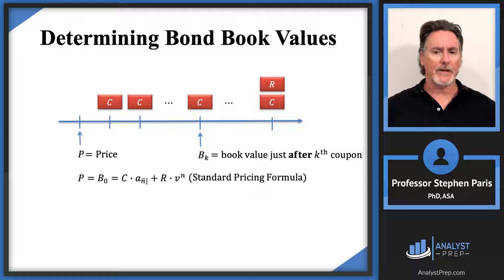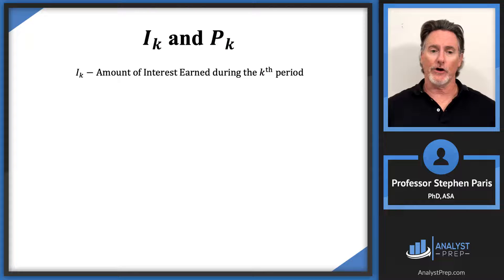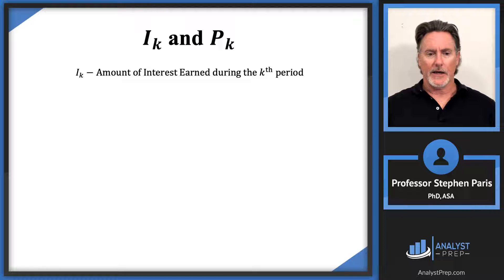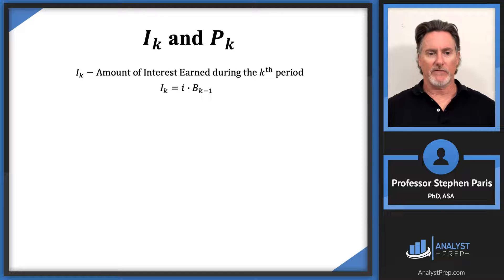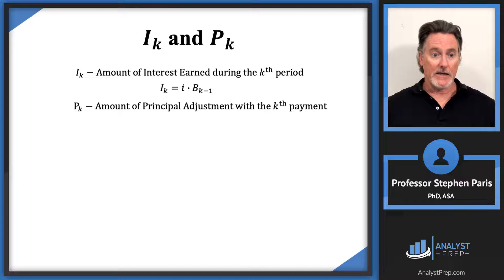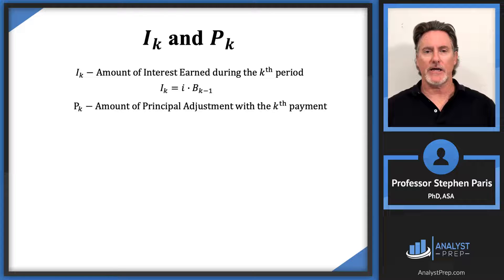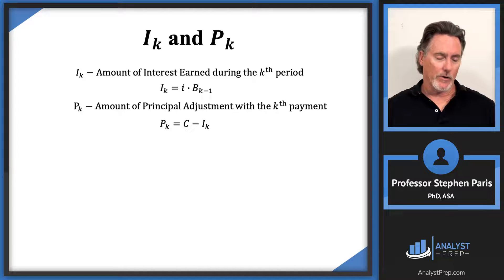Let's look more closely at I_k and P_k. Cap I is the amount of interest earned during the kth period. Because we're in the bond context, we're the lender earning interest. We calculate I_k the same way as with loans: multiply i times B_{k-1}, the book value at time k minus one, by the yield rate to get the interest earned during the kth period. Cap P_k is the amount of principal adjustment with the kth payment, calculated by subtracting I_k from the coupon payment cap C.